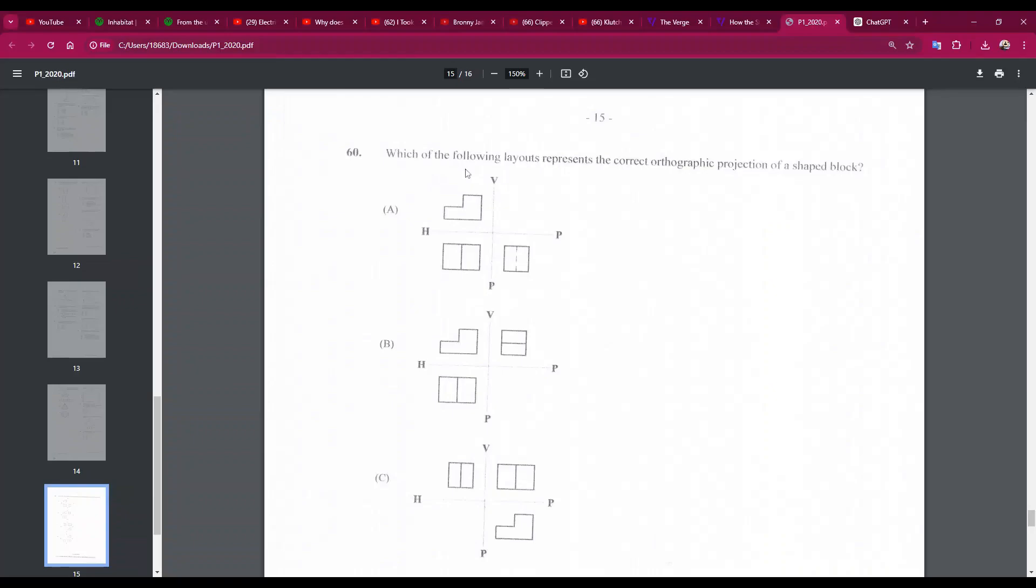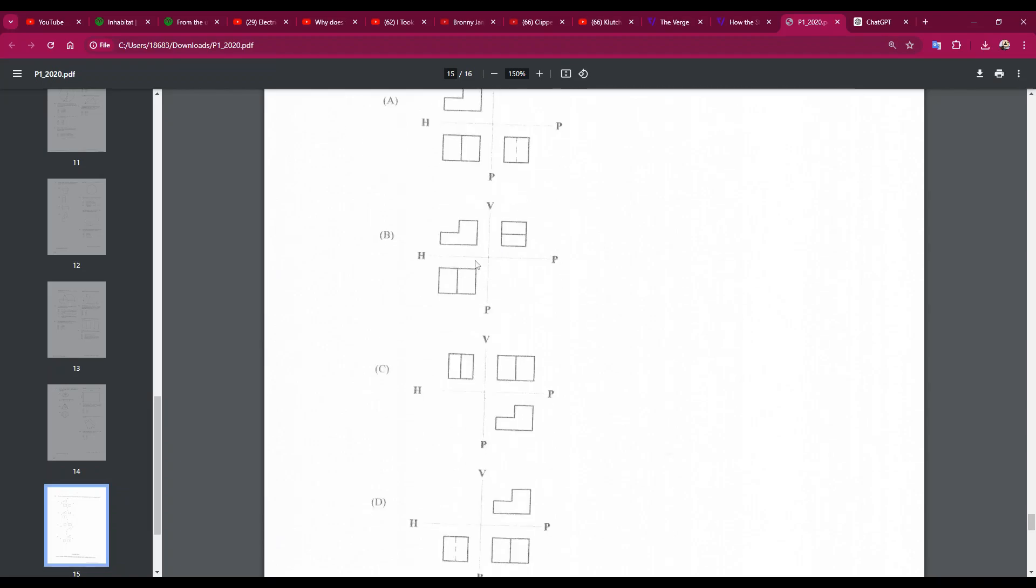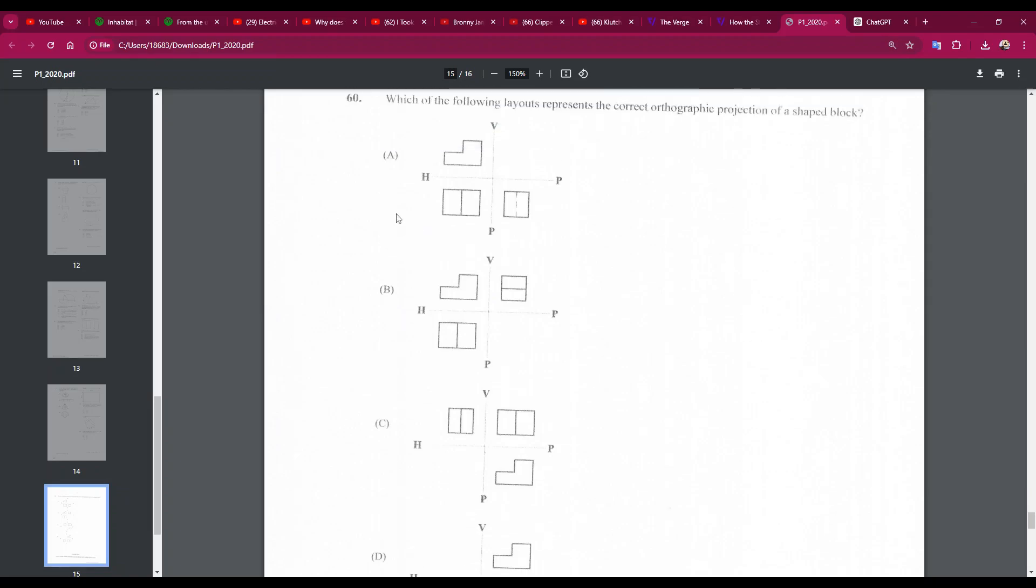Number 60, final question: which of the following layouts represents the correct orthographic projection of a shaped block? So we have A, this looks like our front elevation and our plan, but our side elevation is in the wrong place. We have B, front elevation, side elevation, plan. Let's just look at C quickly. So number 60, the answer is B, front elevation, side elevation, and plan. Number 60B, and this brings us to the end of our paper.